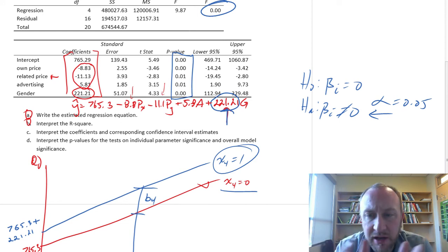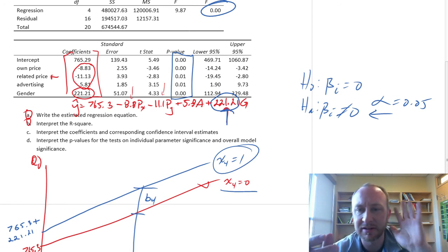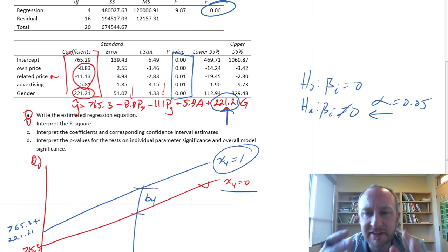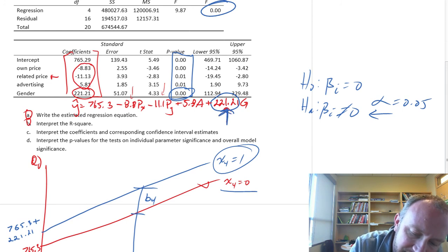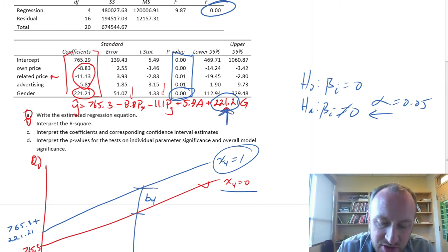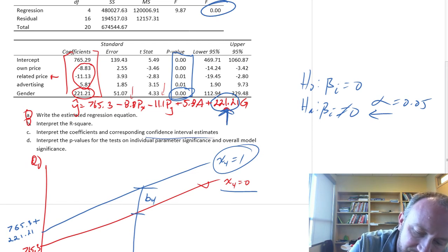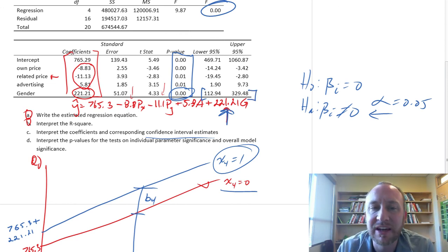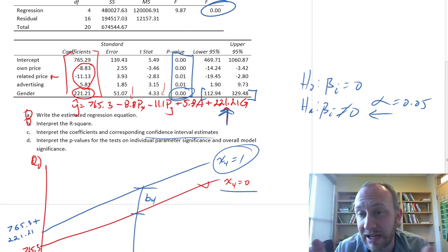A lot of the interpretation on the slope coefficients is similar since the beginning of module 14. These dummy variables, it's important to remember that they are not a slope in the same sense that these other ones are. They are just telling you the average difference between the different levels of a categorical variable. Here it was found to be statistically significant with a point estimate of 221.2. We have that interval estimate: I'm 95% confident that the difference in average quantity demanded between men and women is between 112.9 and 329.5.